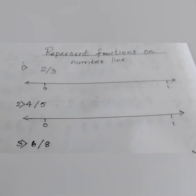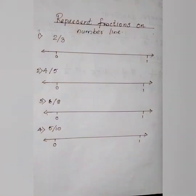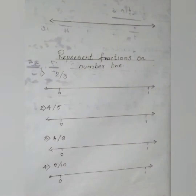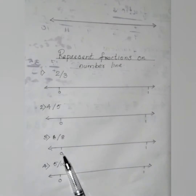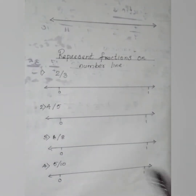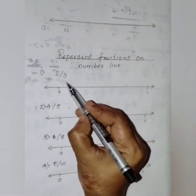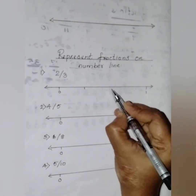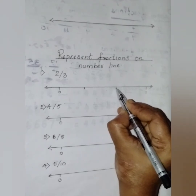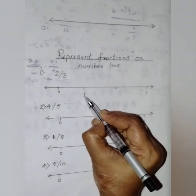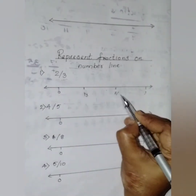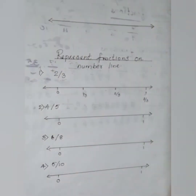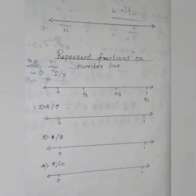Proper fractions will be in between 0 and 1. I have drawn all the number lines and marked 0 and 1 for each. Now let us find out where these fractions can be represented. Let us take the first question: it is 2/3. Look at the denominator — it is 3. It means that we have to make 3 divisions after 0: 1/3, 2/3, and 3/3. And 3/3 is nothing but 1.